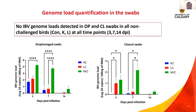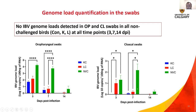For IBV genome load quantification in swabs: no IBV genome load could be detected in oropharyngeal and cloacal swabs of all non-challenged birds at any time point. In oropharyngeal swabs, the IBV genome load in the NVC group was significantly higher than the KC group at 3 DPI, and significantly higher than both vaccinated challenge groups at 7 DPI. At 14 DPI, no significant differences were observed. For cloacal swabs, at 3 DPI the IBV genome load in both NVC and LC groups was significantly higher than the KC group. At 7 DPI, the NVC group was significantly higher than both vaccinated challenge groups. At 14 DPI, no significant differences were reported.